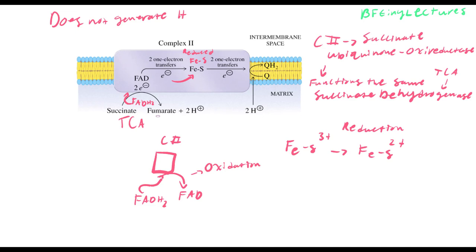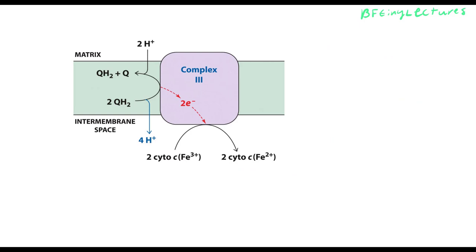To recap complex 2: succinate converts into fumarate, creating FADH2. FADH2 is taken by succinate dehydrogenase into complex 2. FADH2 is oxidized into FAD, releasing two electrons. Those electrons are transported via iron-sulfur proteins — a reduction reaction — and those irons shoot the electrons into coenzyme Q, which transfers them to complex 3 where the reaction continues.